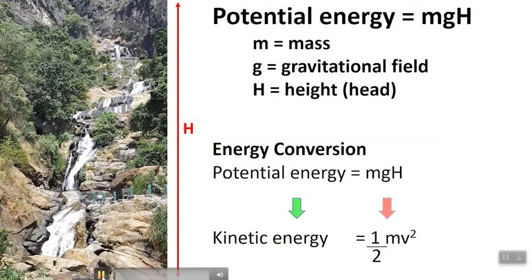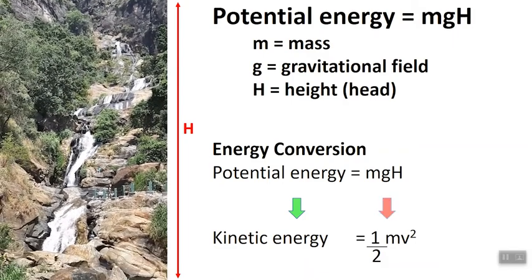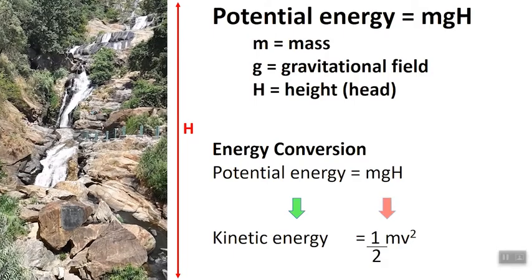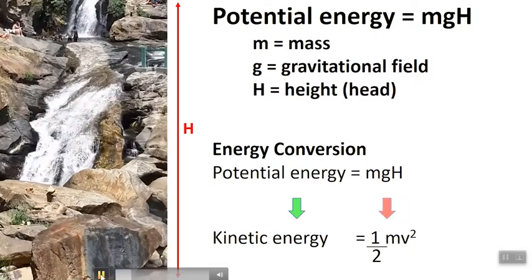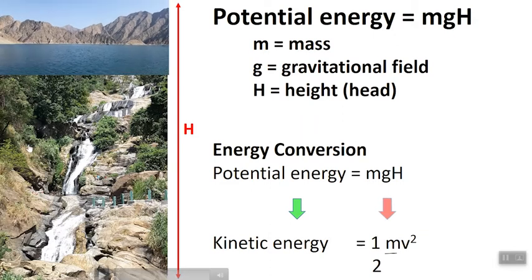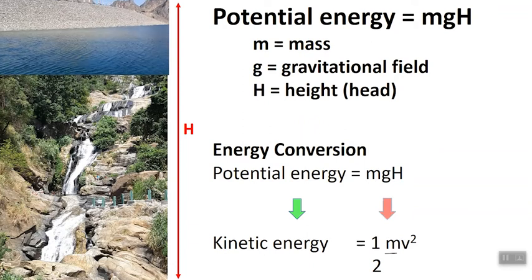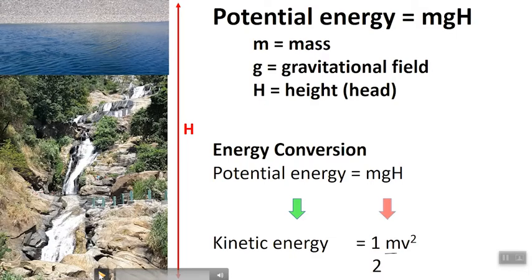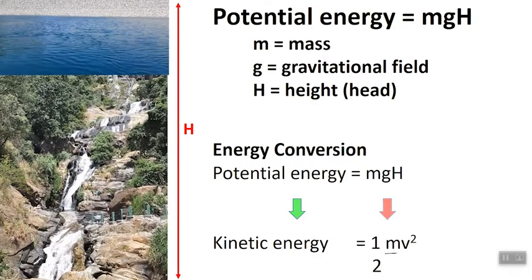You can see the water is falling from a higher elevation to a lower elevation. The energy conversion involves potential energy converting to kinetic energy. If you can store water at a higher elevation, you can convert that energy to kinetic energy at a lower elevation, and then you can utilize the kinetic energy on a machine.